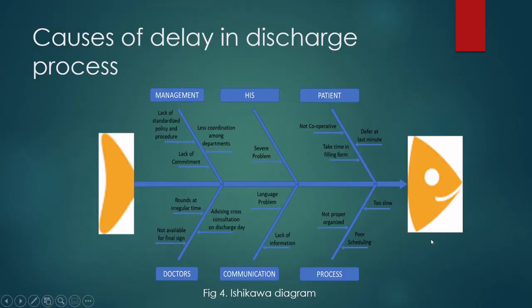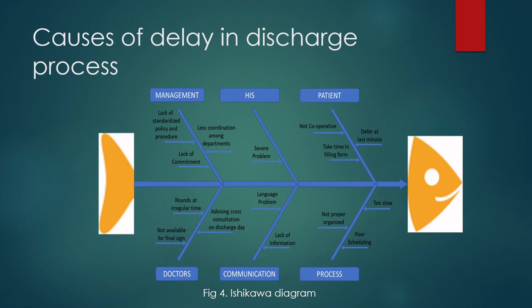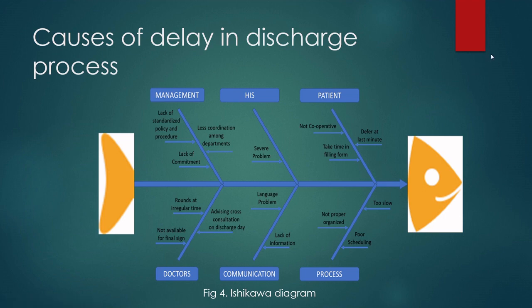After analyzing these studies, the data was evaluated using an Ishikawa diagram to show the causes of delay in the discharge process and identify factors causing an overall effect. In the management system, causes include lack of standardized policy and procedure, lack of commitment, and poor coordination among departments. A severe problem is the hospital information system. Patient non-cooperation — such as deferring decisions at the last minute and taking time to fill forms — also contributes. The process is too slow, disorganized, and poorly scheduled. Communication issues include language barriers and lack of information. Doctors not being available for final signatures at regular times, and advising cross-consultation on the discharge day, are also identified as key factors.